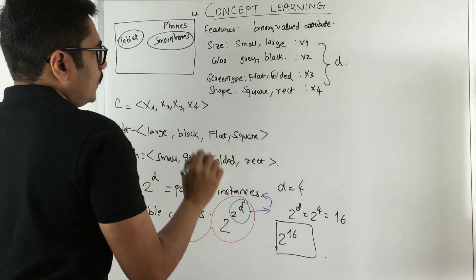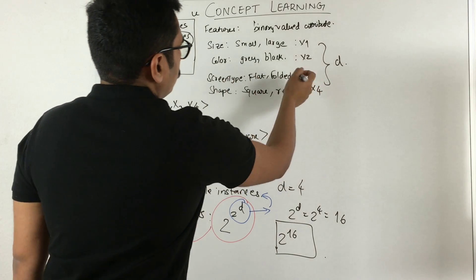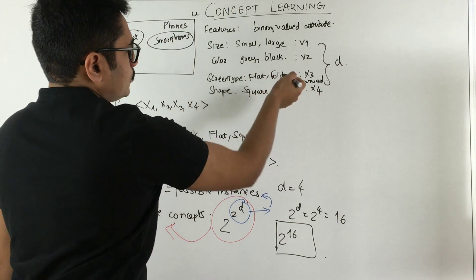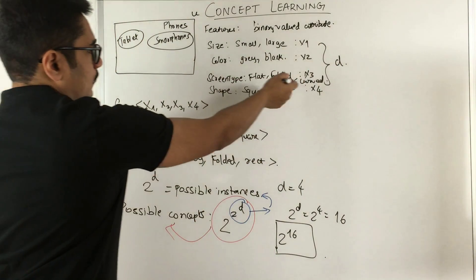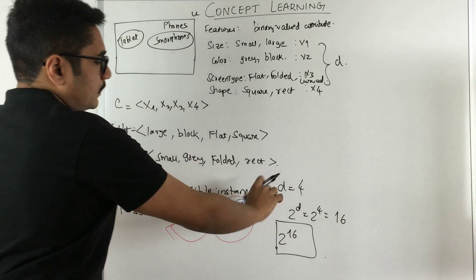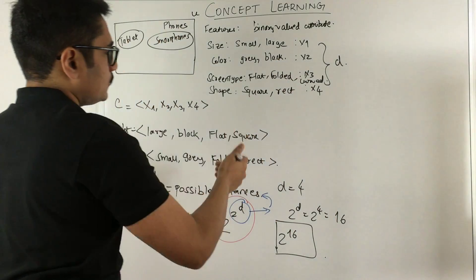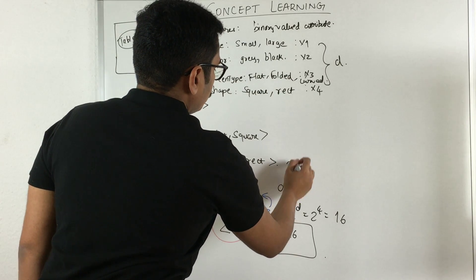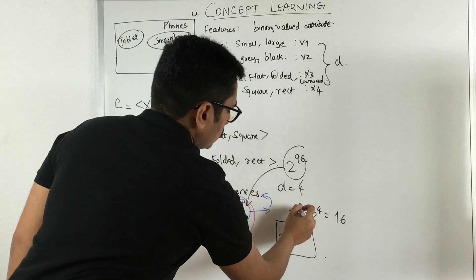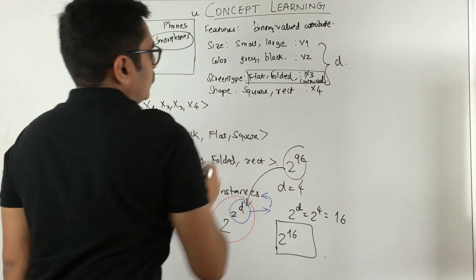This representation works only when you have binary-valued attributes. Say for instance the screen type has values flat, folded, and curved — now this attribute is no longer binary but has three values. There you cannot express the number of possible instances as 2^d. In that case you would have 2 raised to 96 possible concepts, and you cannot express this in terms of 2^d because it is no longer a binary-valued attribute.